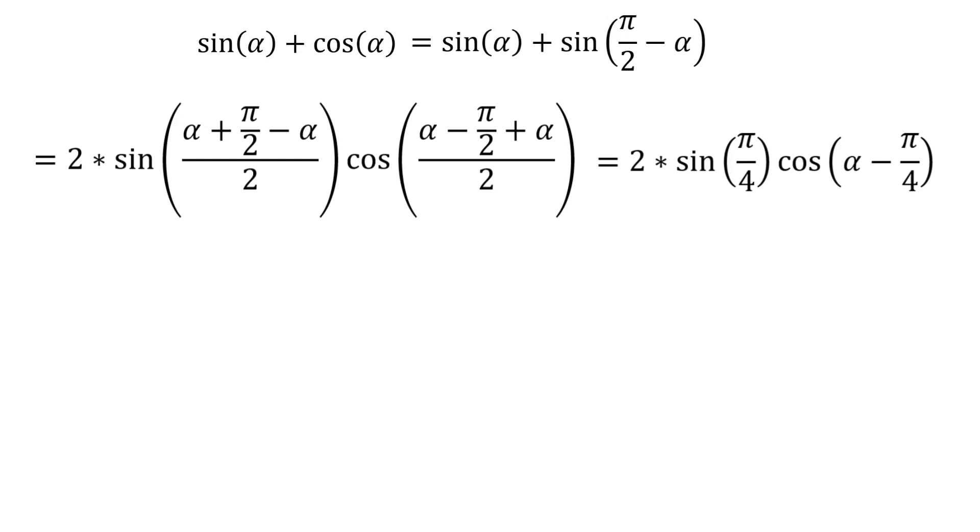Simplifying this equation, we arrive at a single term, which can be further simplified since we know that the value for sine of pi divided by 4 is square root of 2 divided by 2. It will lead us to the final form of the identity.